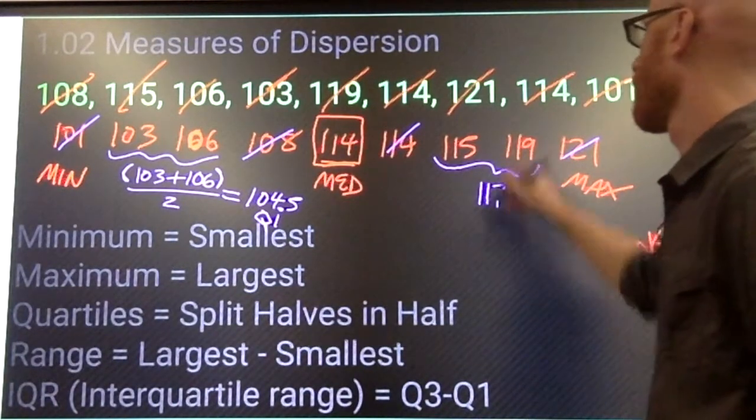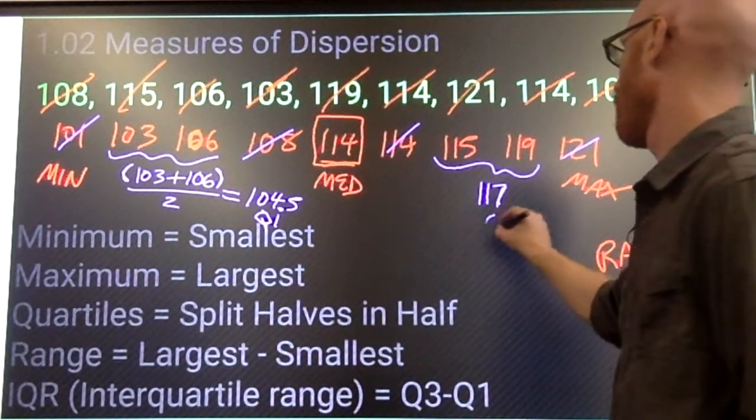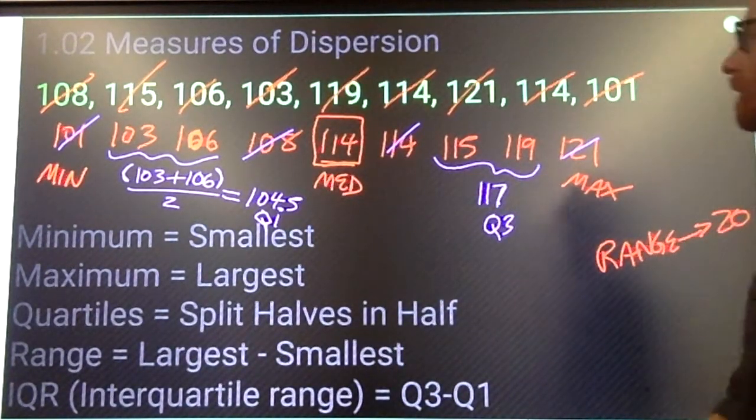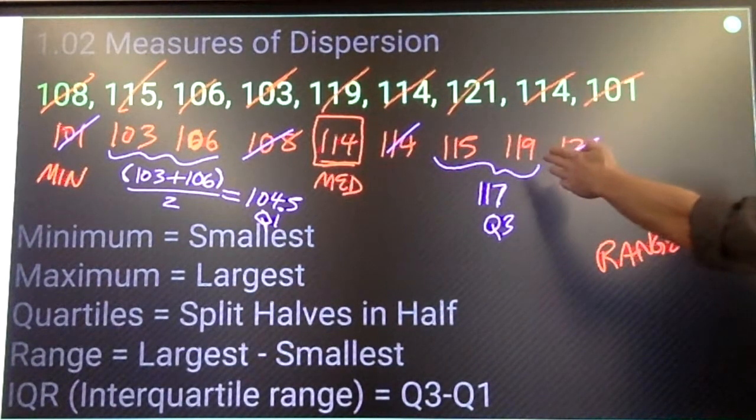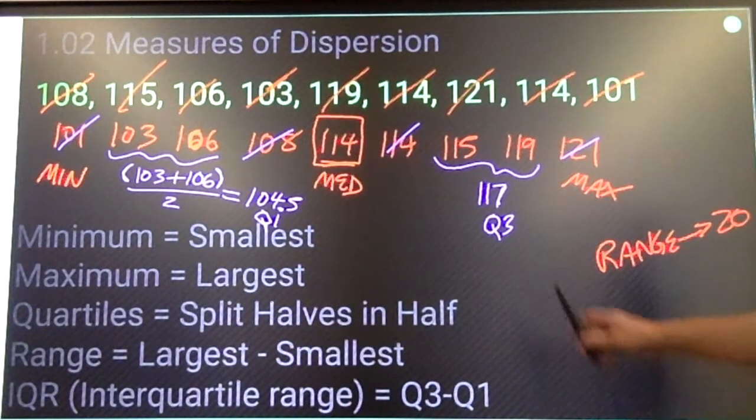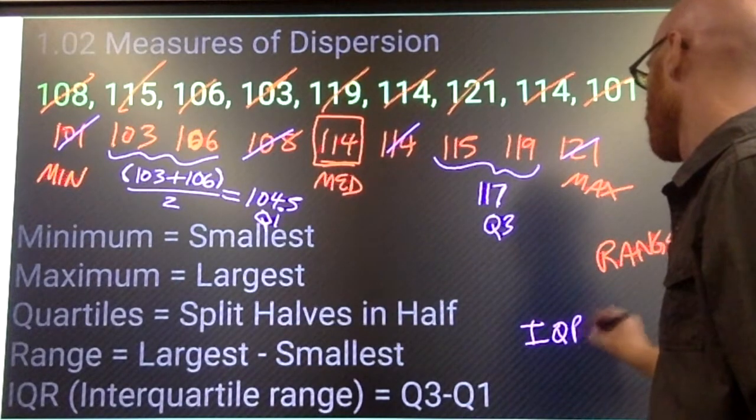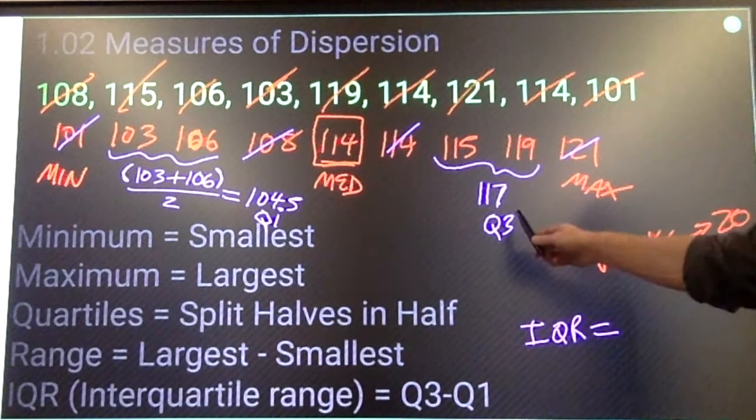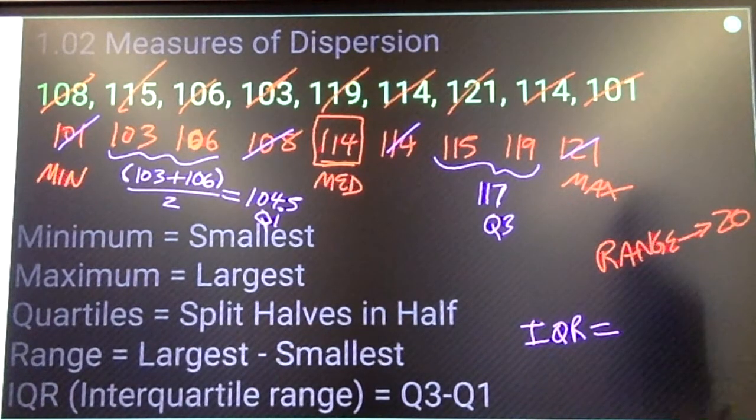Split my halves in half, quartile one. Split my half in half, quartile three. Interquartile range is upper quartile minus lower quartile. 117 minus 104.5, 12.5.